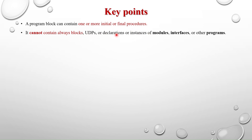Why can't we use the always block? The program block is intended for writing testbenches, not synthesizable code. We use always blocks in modules to design combinational or sequential circuits. Also, we can terminate processes created by the initial block, but there is no way to terminate an always block — it always keeps running. Calling $exit terminates initial block processes but cannot terminate an always block, so there is no need for it in the program block.